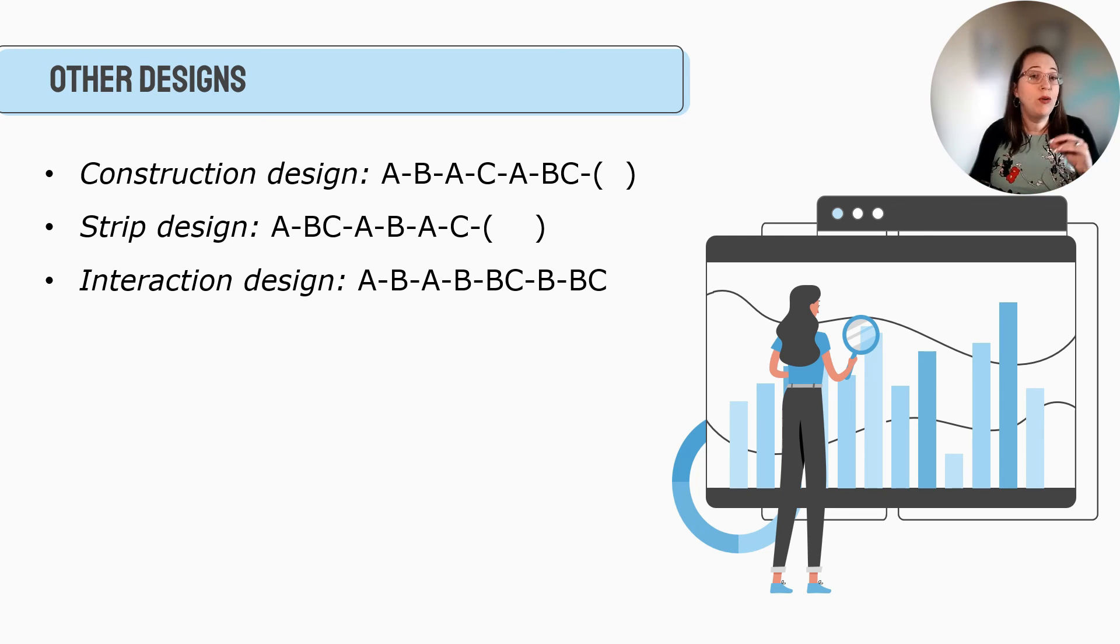We also have the strip design where we might start with our baseline. Then we introduce two interventions at once. Then we go back to baseline. Then we do one intervention B, baseline, the other intervention C, and then we pick. And then interaction design. So these are more complicated and they're still vulnerable to history and carryover effects, but it at least gets us some numbers and data about what is really the effect on the individual with different combinations, so to speak.